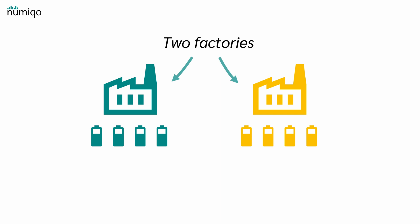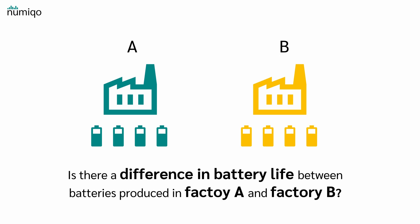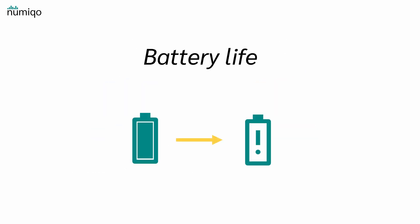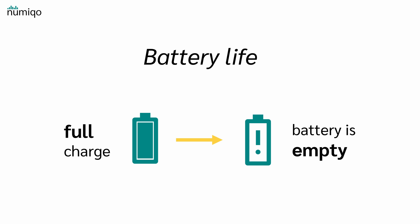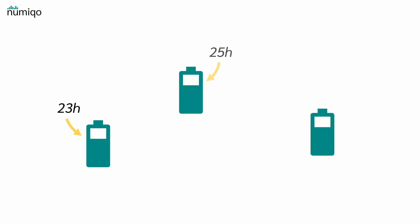In order to understand the p-value, let's have a look at this example. Let's say we have two factories producing phone batteries, Factory A and Factory B. We want to know: is there a difference in battery life between batteries produced in Factory A and Factory B? We measure battery life as the time from a full charge until the battery is empty. If we measure several batteries, we get values like 23 hours, 25 hours, and so on.